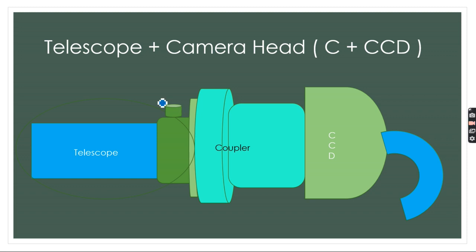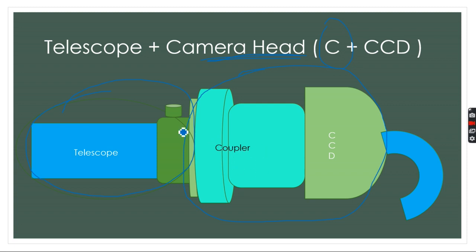To clarify: the telescope alone refers to just this part. If we attach something to the proximal part of the telescope, that portion is known as the camera head. The camera head contains two things: the coupler — which is the attachment between the telescope and the CCD — and inside the camera head, proximal to the coupler, is the CCD or charge-coupled device. It captures and analyzes the image and sends it to the monitor for display.